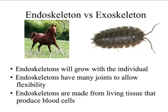We're going to look at the advantages and disadvantages of those different skeletons. We're not going to deal with the hydroskeleton in much detail, but the endoskeleton versus the exoskeleton are the ones we'll focus on. Endoskeletons grow with the individual bones as the individual grows. Endoskeletons also have joints that allow flexibility. Endoskeletons are made from living tissue that produces blood cells — the bone marrow, the internal part of your bone, produces your white blood cells.